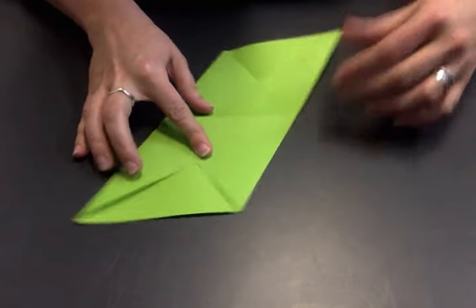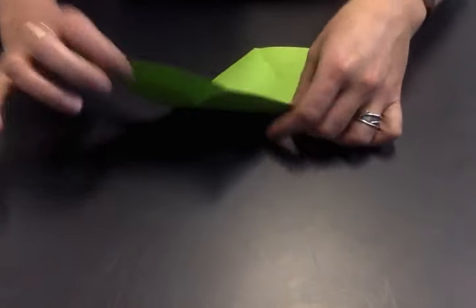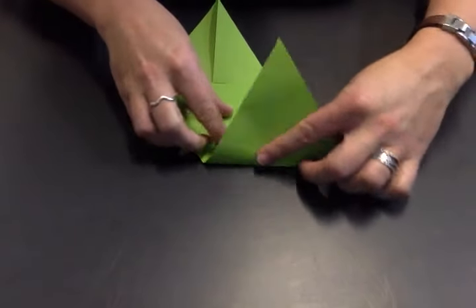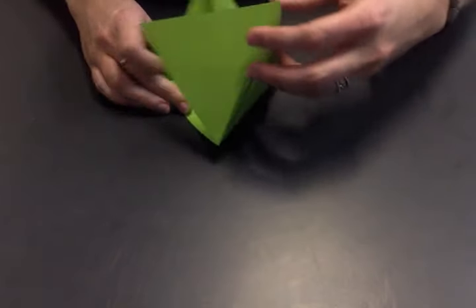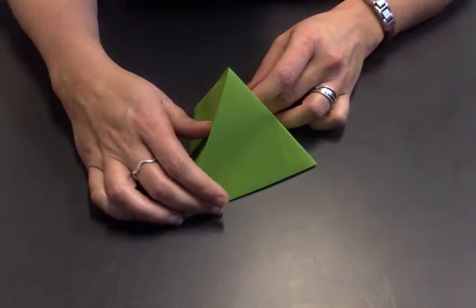In both cases you then need to fold what looks like the net of a tetrahedron all in one direction, so that all the folds would actually make you a tetrahedron if you folded the piece up.